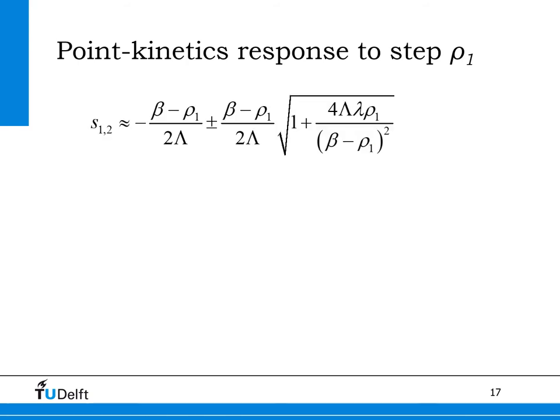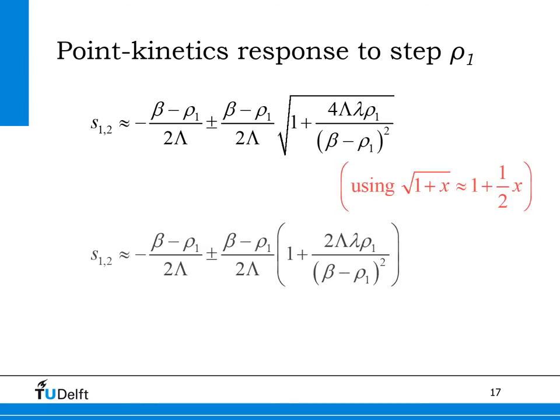Here we have shown the expressions for the roots S1 and S2 again. Approximating the roots with the first term of the Taylor expansion, we get the final values of S1 and S2 shown on the slide. For small values of reactivity, S1 is almost proportional to the reactivity and always has the same sign as the reactivity. The value of S2 is always negative, and because the generation time is generally very small, it always has a large negative value.